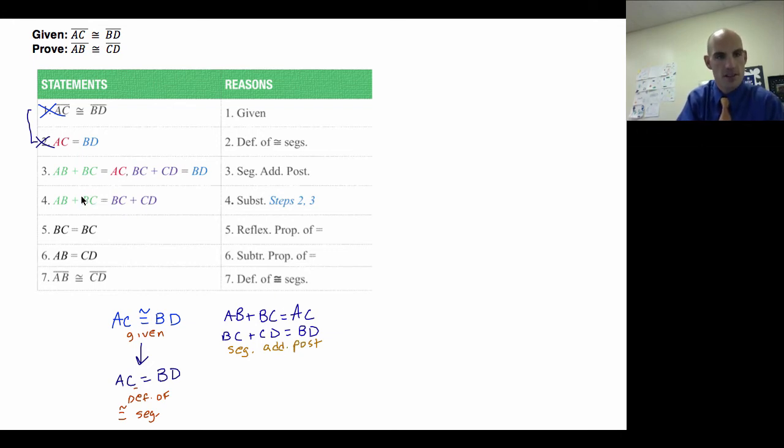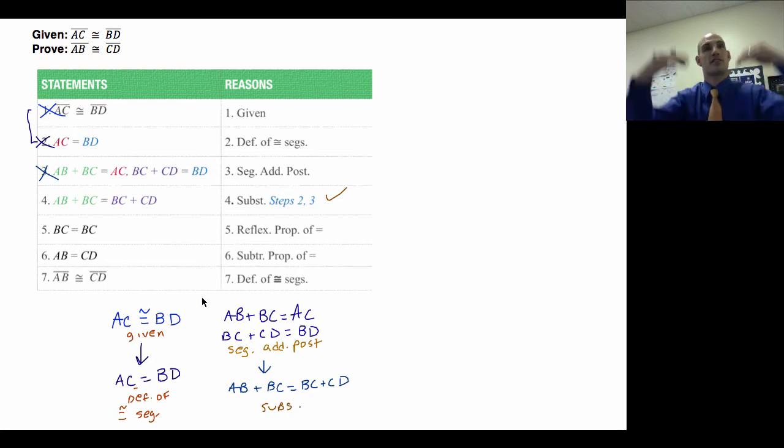Well, notice this next line flows from that. So what I'm going to do is I'm going to move down and I'm going to say AB plus BC is equal to BC plus CD. Once again, making sure I'm justifying everything I'm saying, so that's substitution.